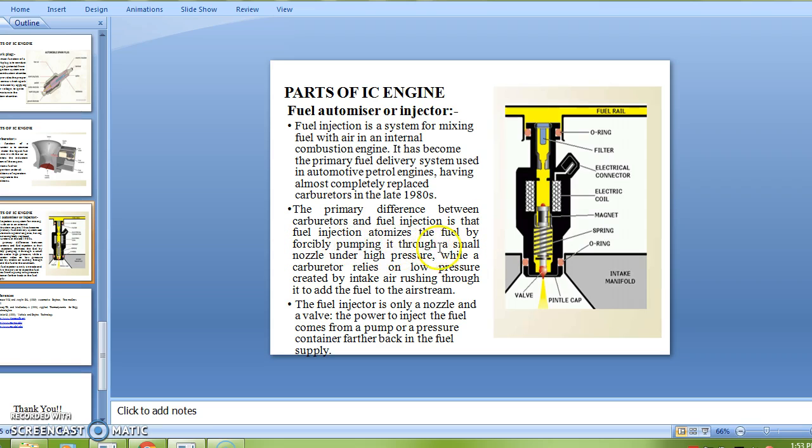The primary difference between carburetor and fuel injector is that fuel injector atomizes the fuel by forcibly pumping it through a small nozzle under high pressure, while a carburetor relies on low pressure created by intake air rushing through it to add the fuel to the air stream.